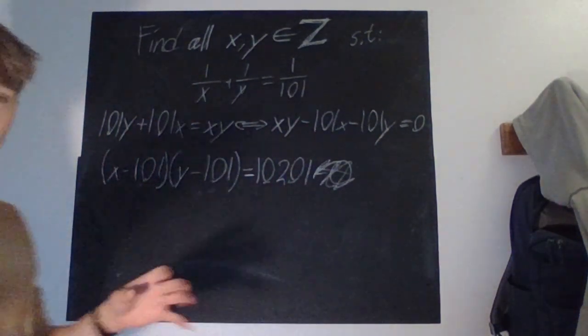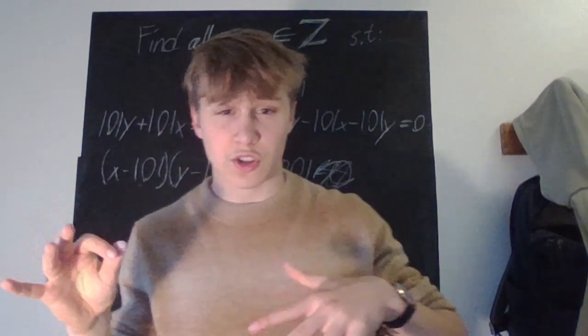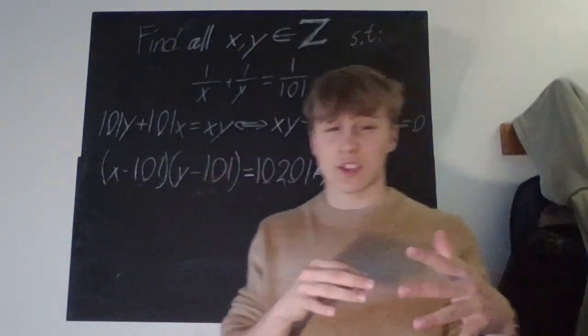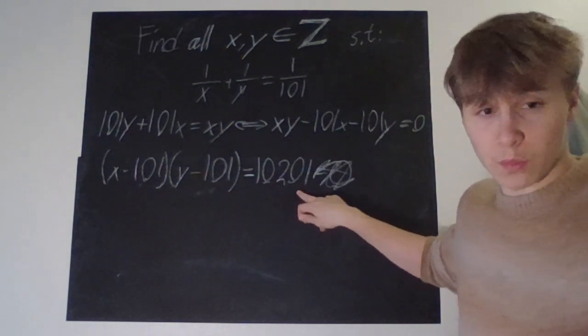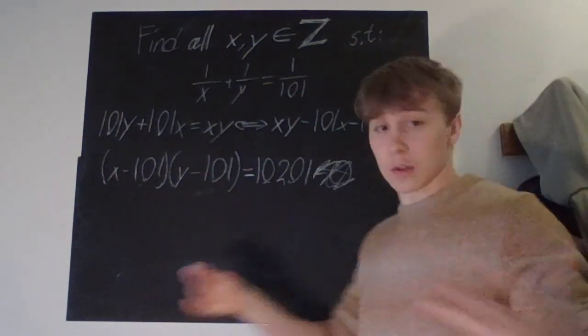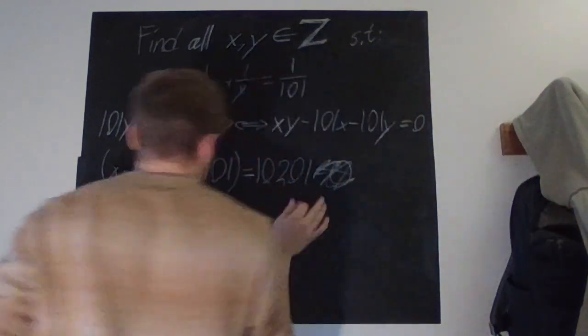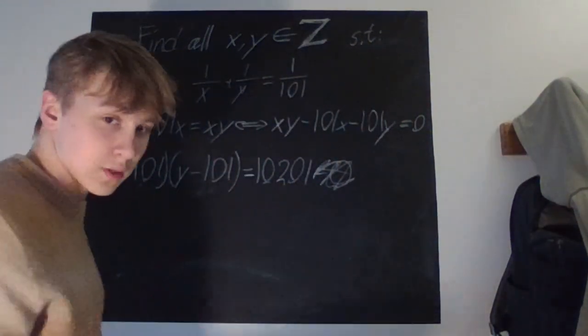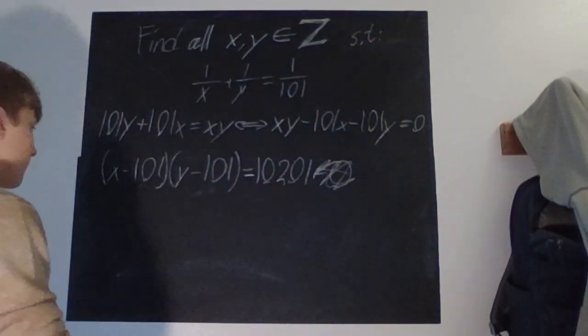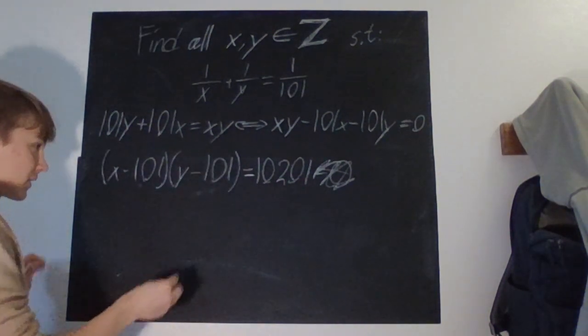And we know that all possible integer multiplications that we can do that end up with 10201, that's all our possible answers for these parentheses. And then, we obviously have to add 101 to get y and x for both.